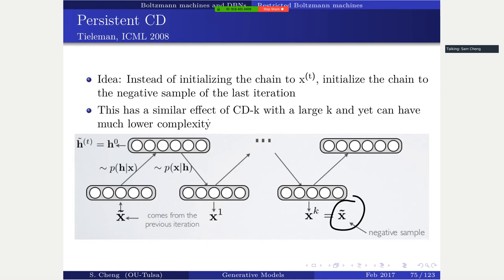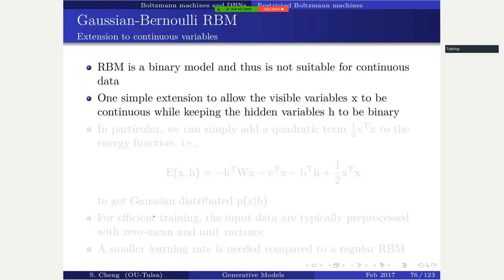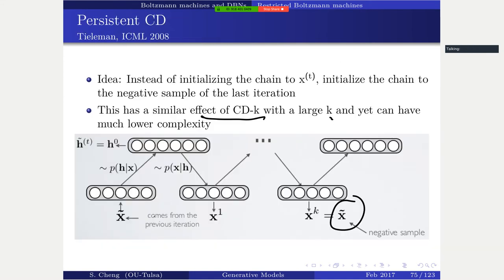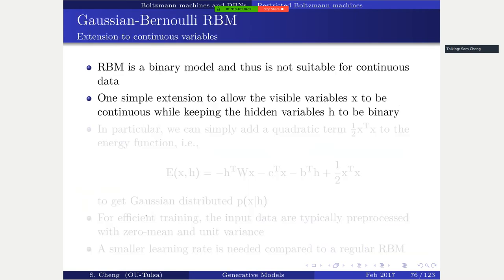You can think of persistent CD as similar to CDk with a large k, but with lower computational cost because each step is just CD1 - however it looks like CDk with a large k overall.